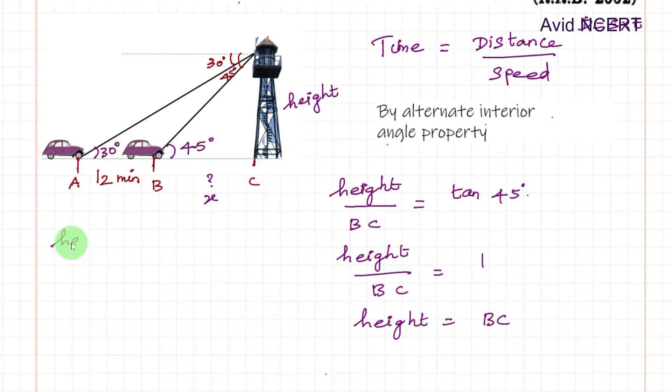From the second triangle, height by AB plus BC equals tan 30 degrees. Tan 30 is 1 by root 3.